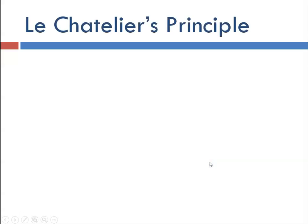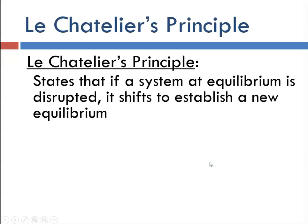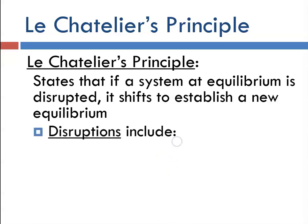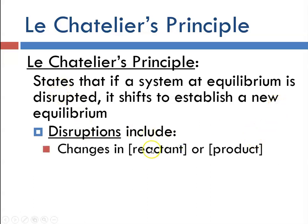Le Chatelier's principle states that if a system at equilibrium is disrupted, it will shift to reduce that disruption and to re-establish the new equilibrium. A stress on the system will result in a shift to remove the stress. Those disruptions could include changes in the reactant or product concentration — remembering that those brackets refer to molarity, moles per liter.